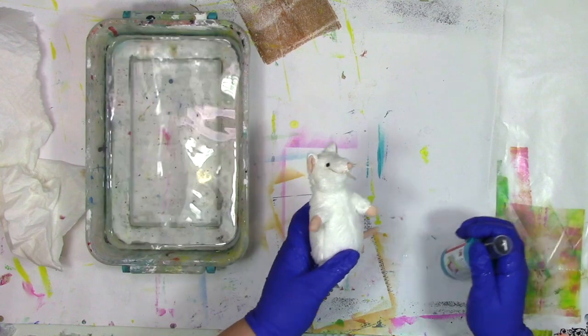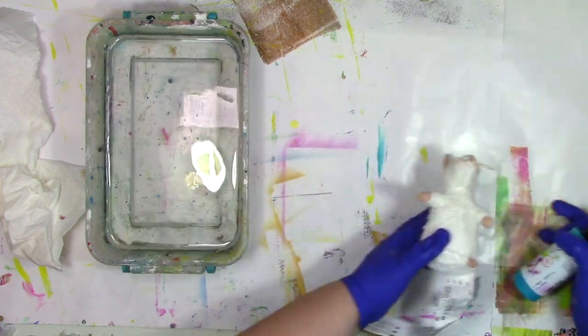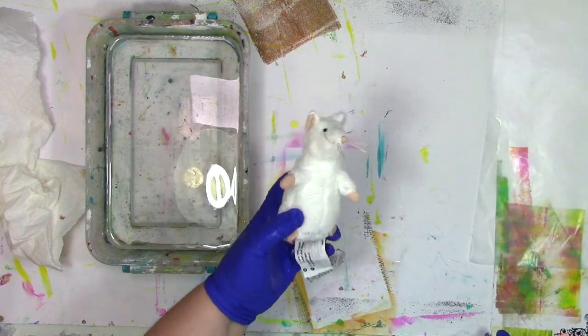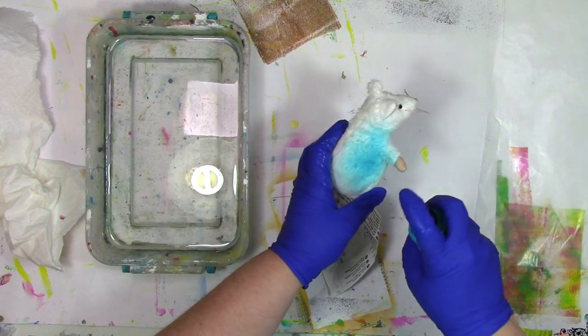So once he's prepped and ready, now it's time to bring in the color. And this is basically a spray ink for fabric. So I'm just going to hold him up. And then it's almost kind of like a spray tan, except with brighter colors.